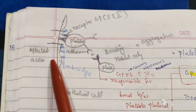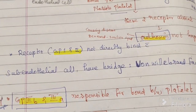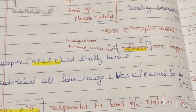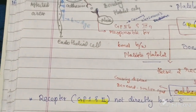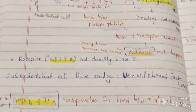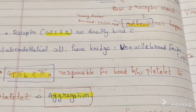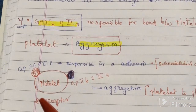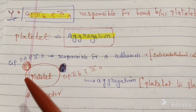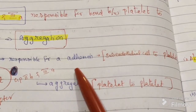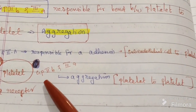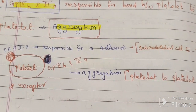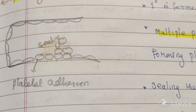Glycoprotein 1a and 2a do not directly bind to the sub-endothelial cell. There is a bridge molecule called von Willebrand factor. Glycoprotein 2b and 3a are responsible for the bond between platelet and platelet — this is called aggregation. So platelets have two receptors: glycoprotein 1a/2a for adhesion (sub-endothelial cell to platelet) and glycoprotein 2b/3a for aggregation (platelet to platelet).